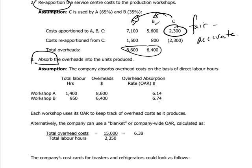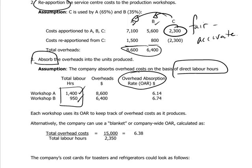In an earlier session we introduced the notion of an overhead absorption rate — the connection between overhead costs and specific individual units of production, and how much each individual unit bears in the way of dollar overhead costs. In this case, the assumption is the company absorbs overhead costs on the basis of direct labor hours. We look at what the total labor hours consumed in the two workshops are, and make a link between overhead costs absorbed and direct labor hours on a workshop-specific basis.